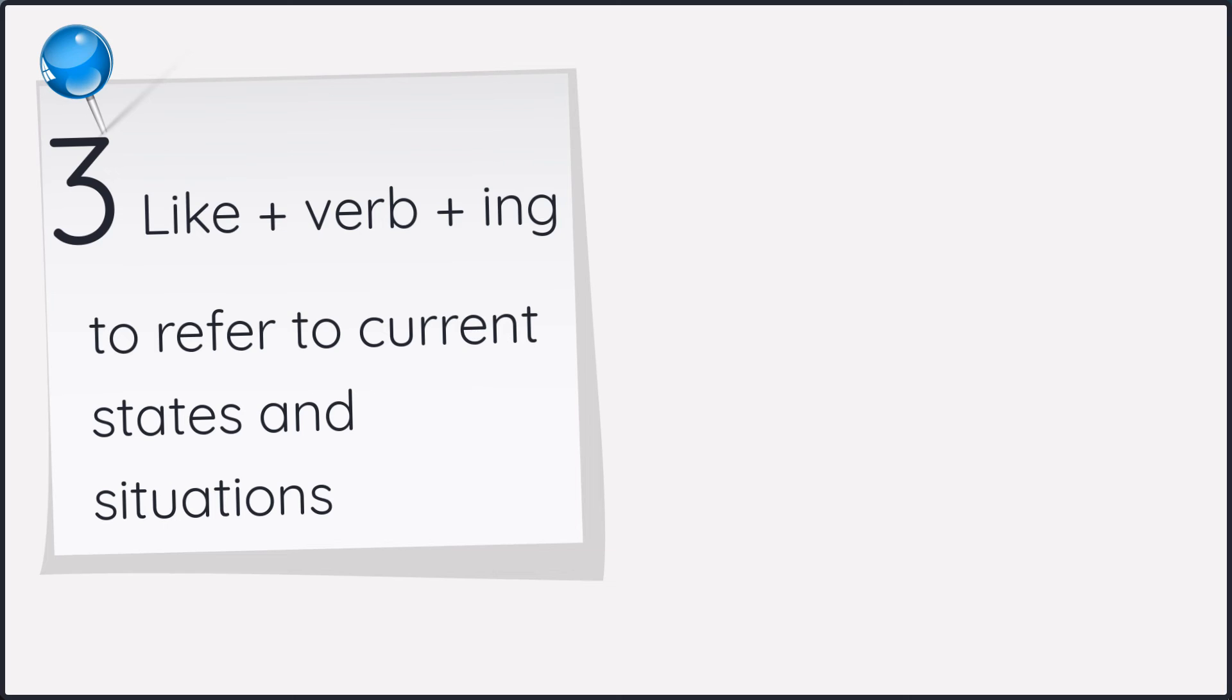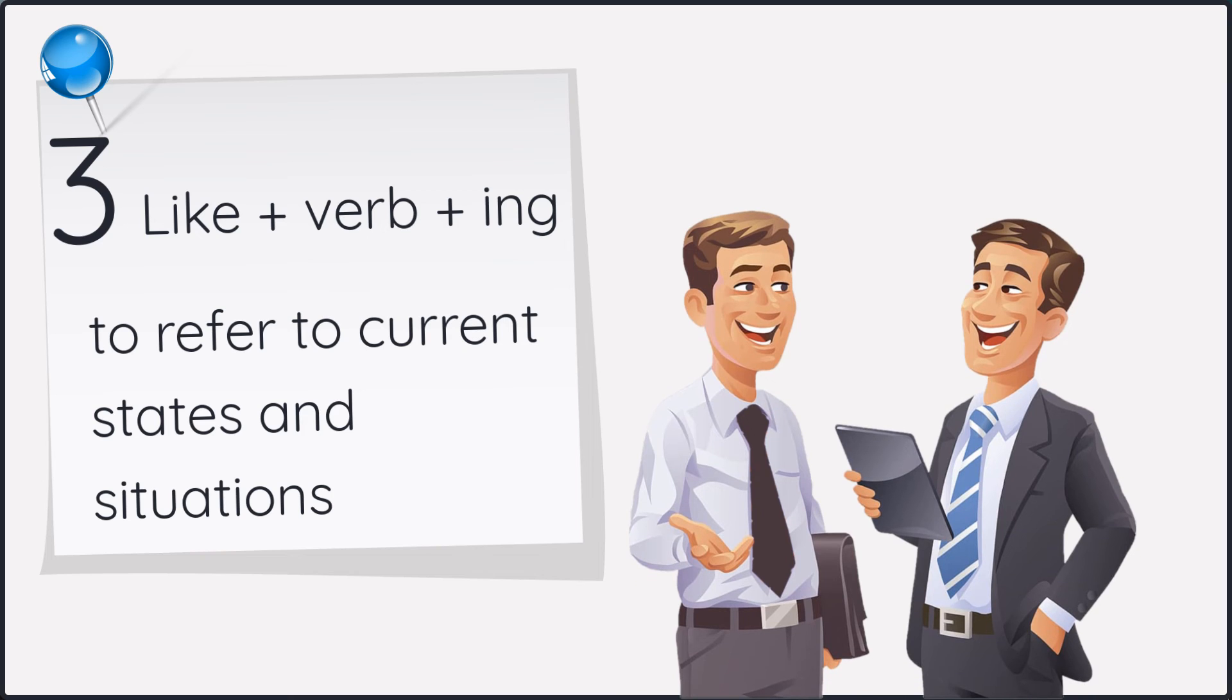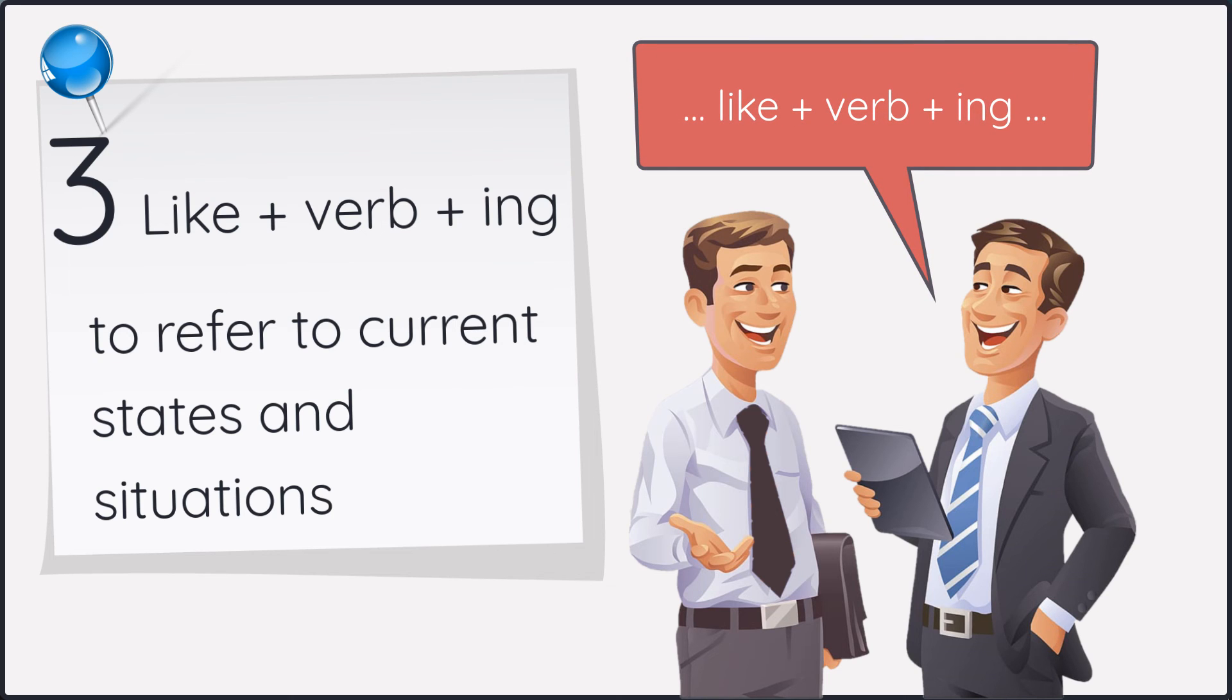Number three, use like plus verb plus ing to refer to current states and situations. Sometimes we want to talk about current states and situations. And if you're happy with your current state or situation, then use like plus verb plus ing. Let me give you some examples.